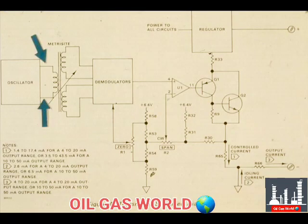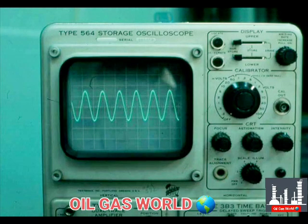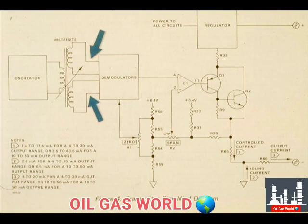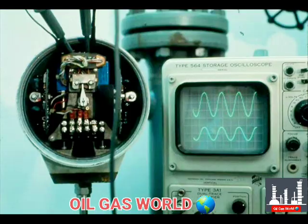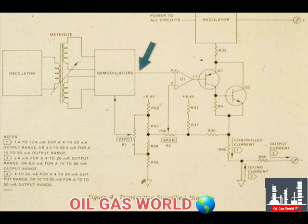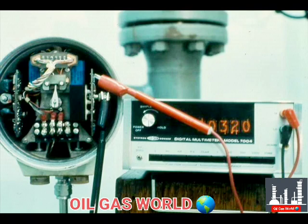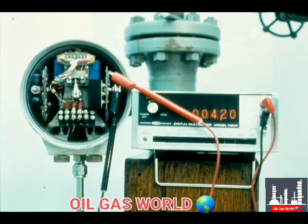Now we will look at the simplified diagram and make voltage measurements to further understand the operation of the device. Here is where we would measure the oscillator output voltage — here you see the waveform. To measure the metricyte secondary voltages, attach inputs here. Attach a DVM from the demodulator output to ground to observe its operation. This is the demodulator output with zero percent level, and this is the demodulator output with 100 percent level.